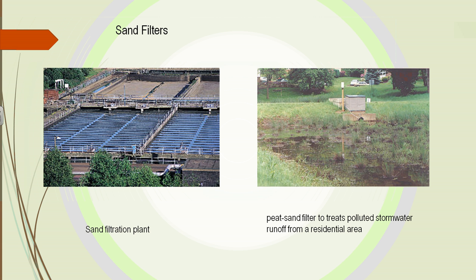We have sand filters — this is big in cities, where all we have to do is take our water and pass it through sand. That can get rid of pollutants and bacteria. In the country, we use peat sand filters, which are a combination of debris from plants along with sand. This treats polluted stormwater, and as it passes through, it's cleaned up so we don't have to give it as much additional treatment.